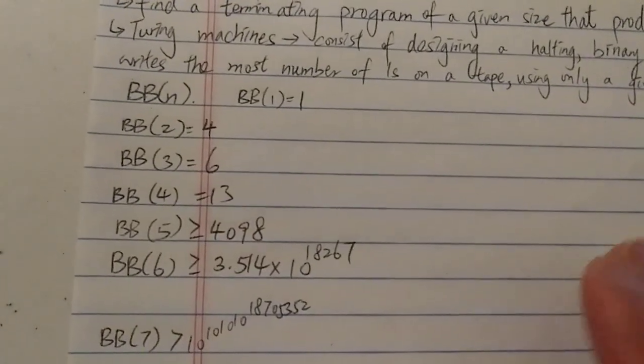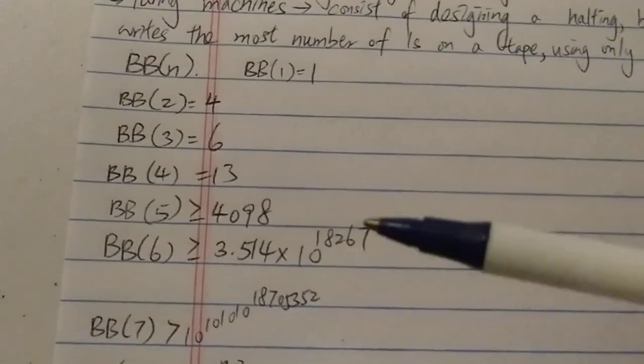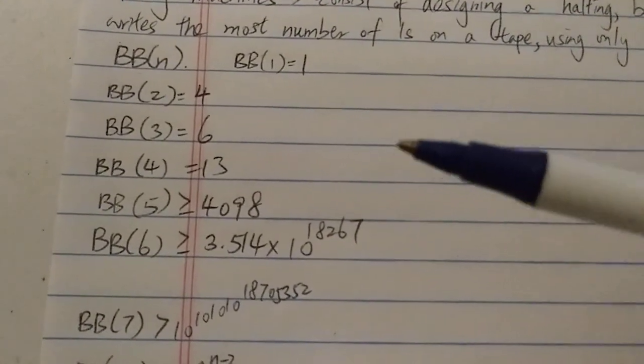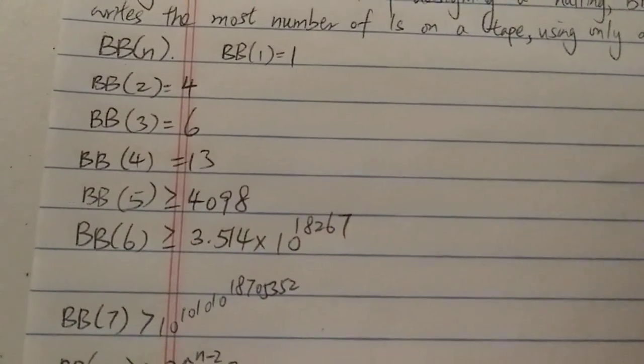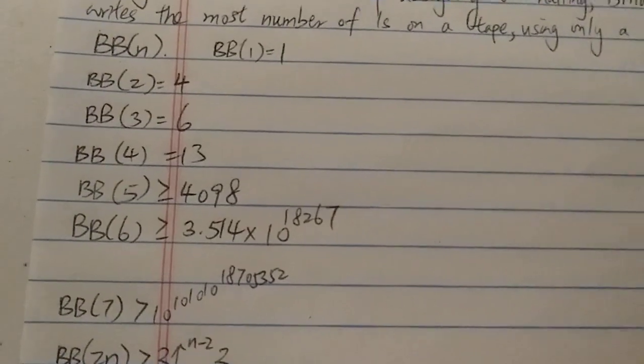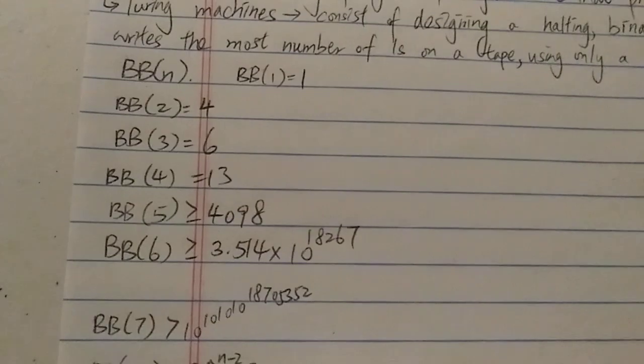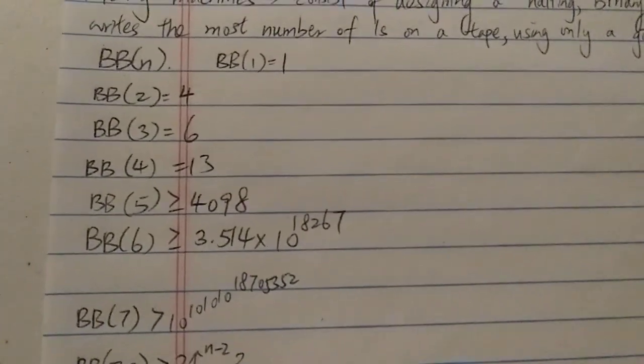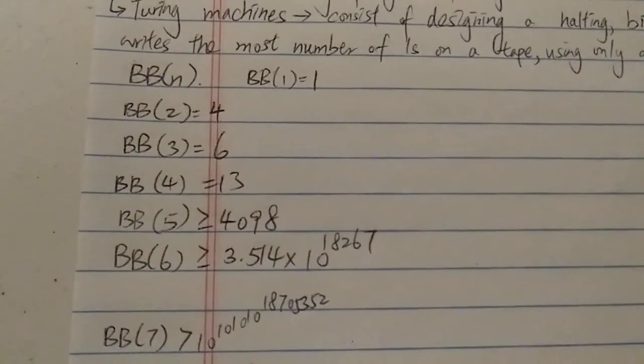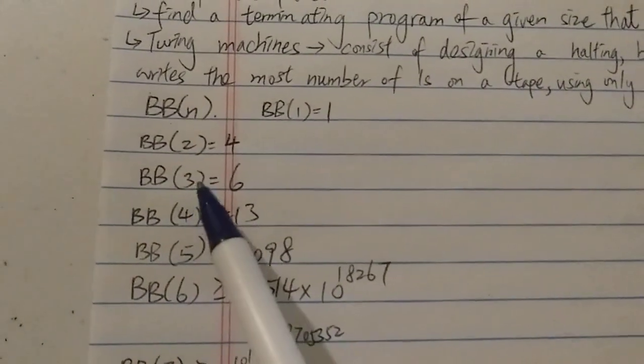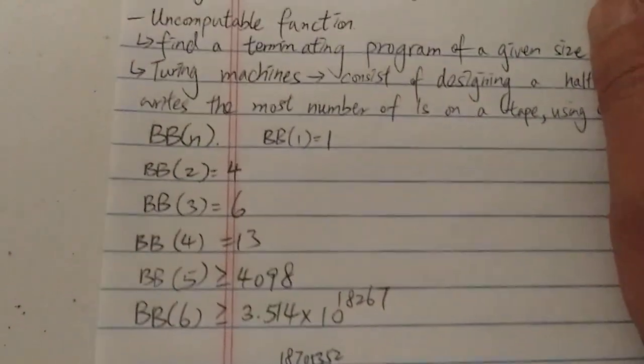For two state busy beaver, the maximum number of ones you're going to get is four. You have to check all the Turing machines to get these numbers. For a three state Turing machine, the most number of ones is six. For busy beaver four, four state, the maximum number of ones is 13.